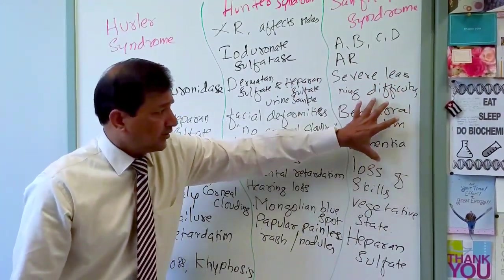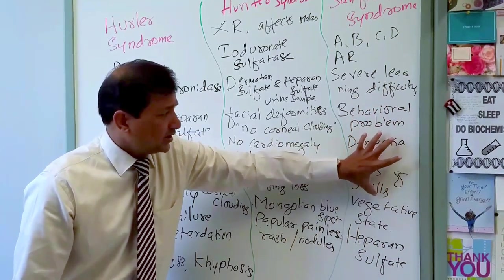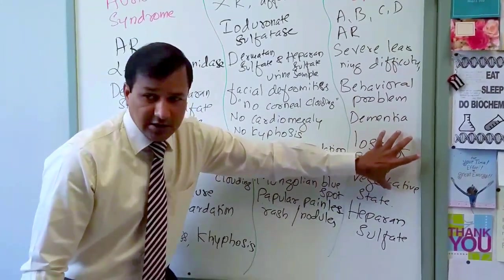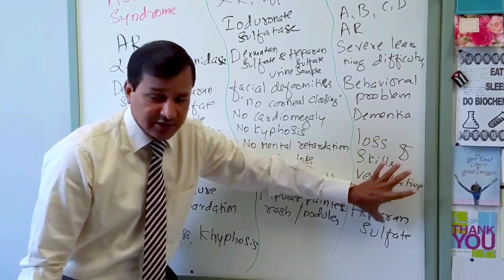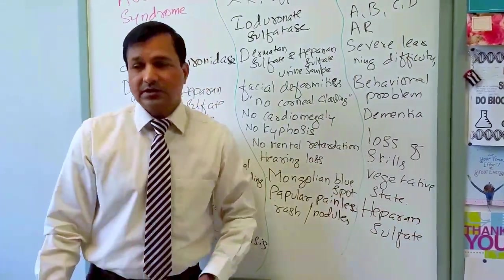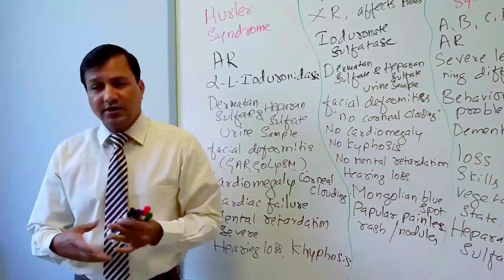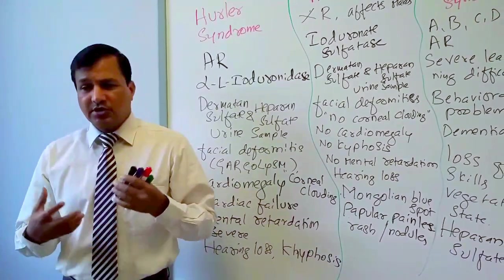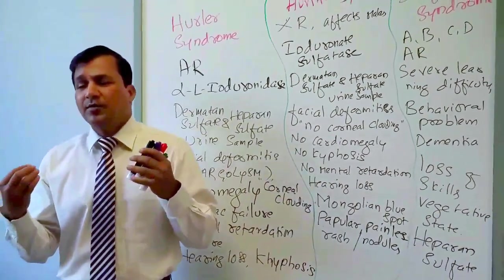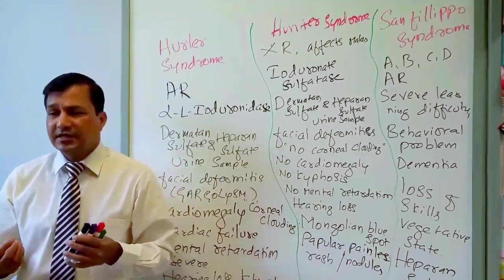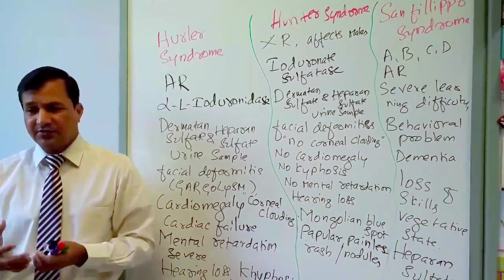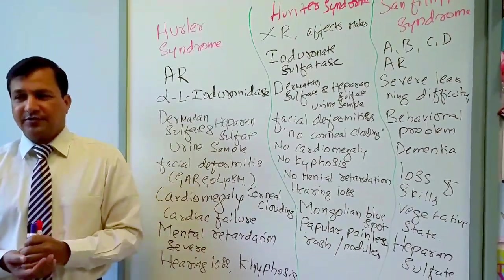Sanfilippo syndrome features: autosomal recessive, severe learning difficulties, behavioral problems, dementia, loss of skills progressing to a vegetative state, and elevated heparan sulfate in urine. These are the major mucopolysaccharidoses — Hurler, Hunter, and Sanfilippo — which are tested in the majority of exams.